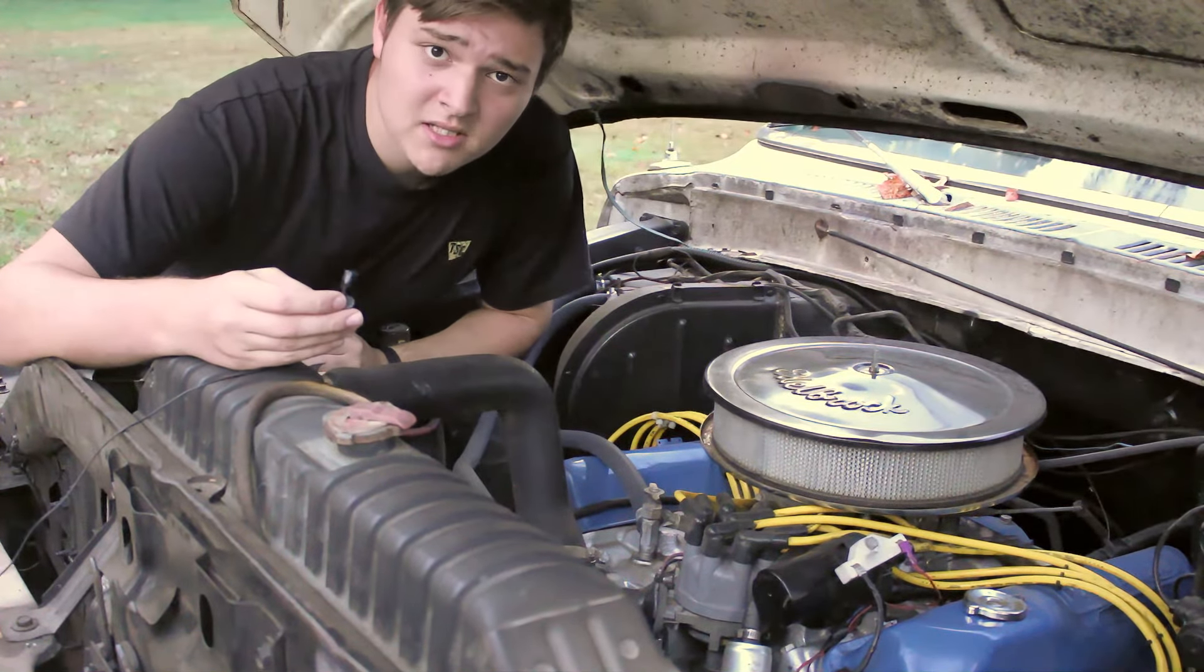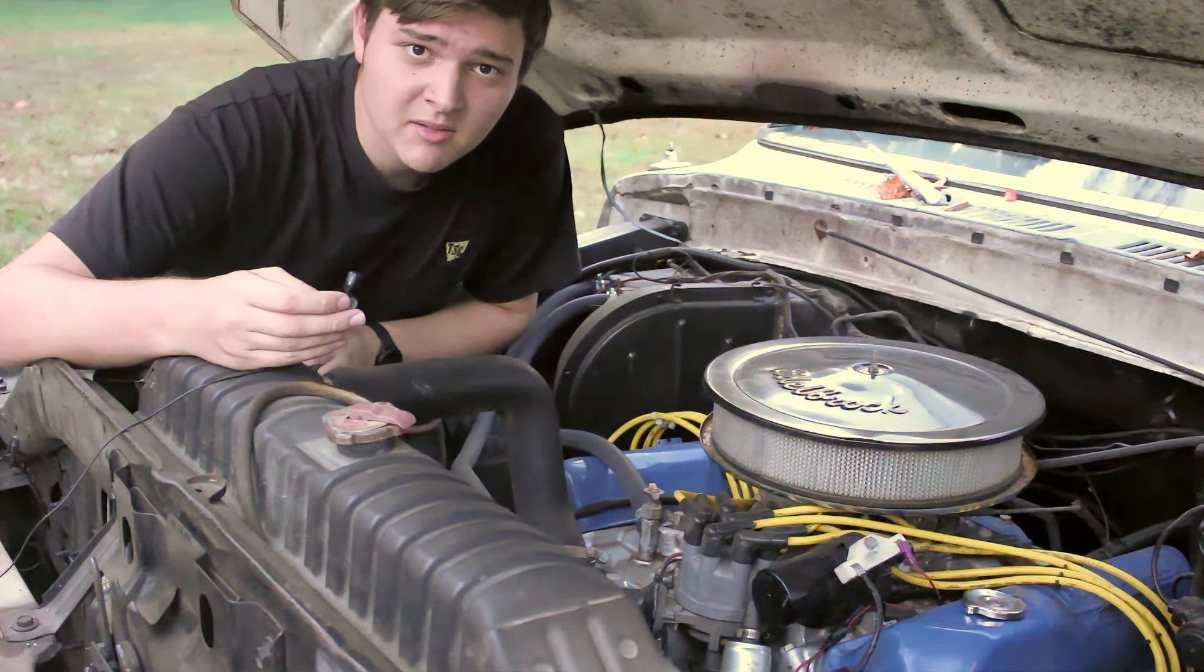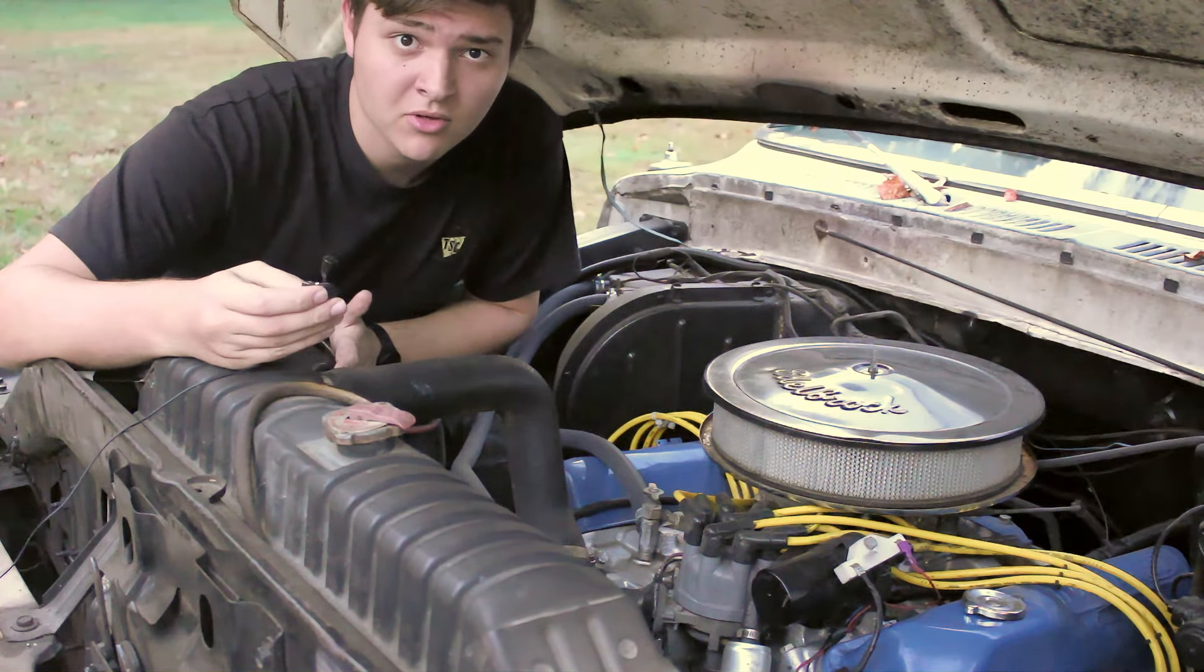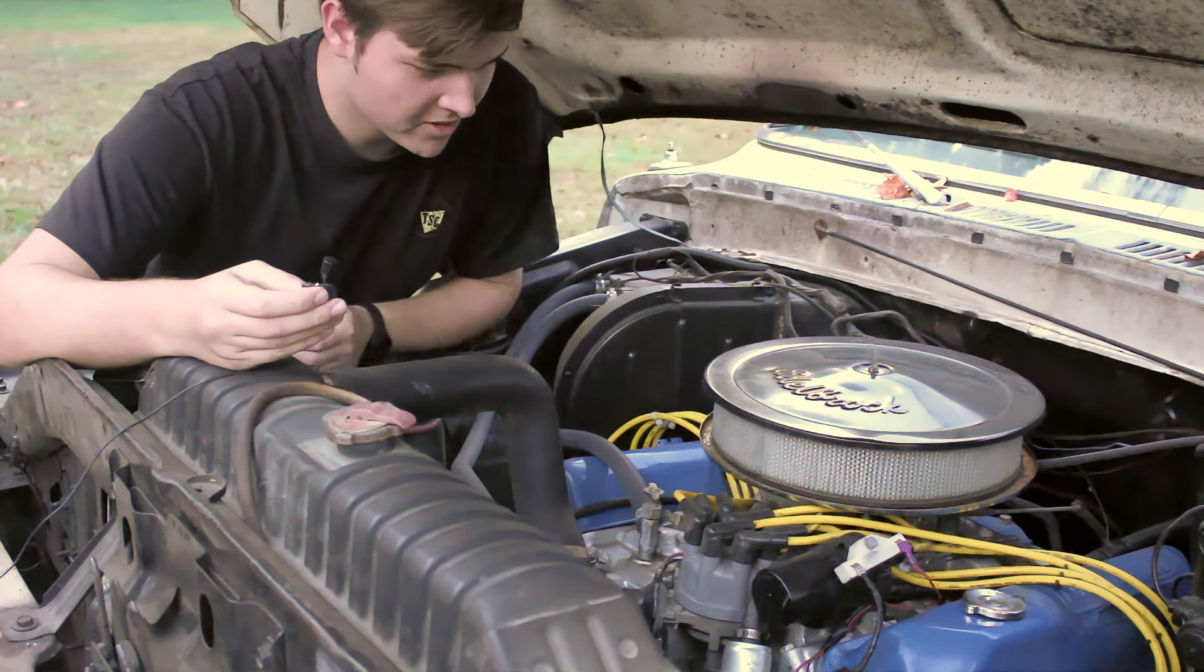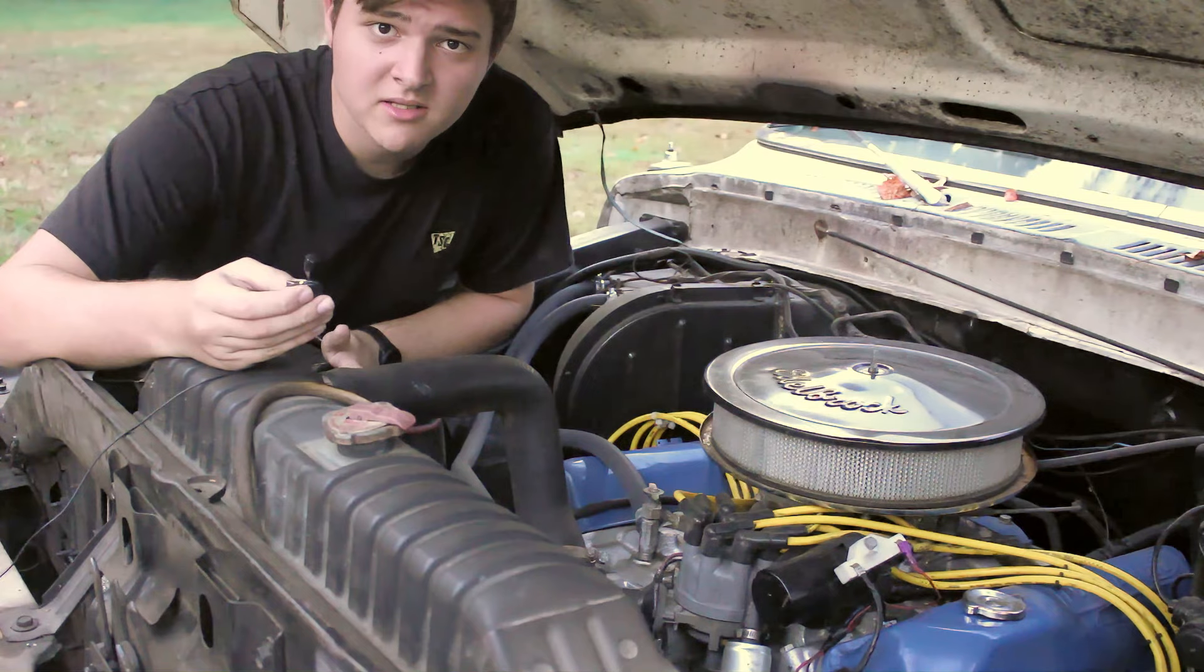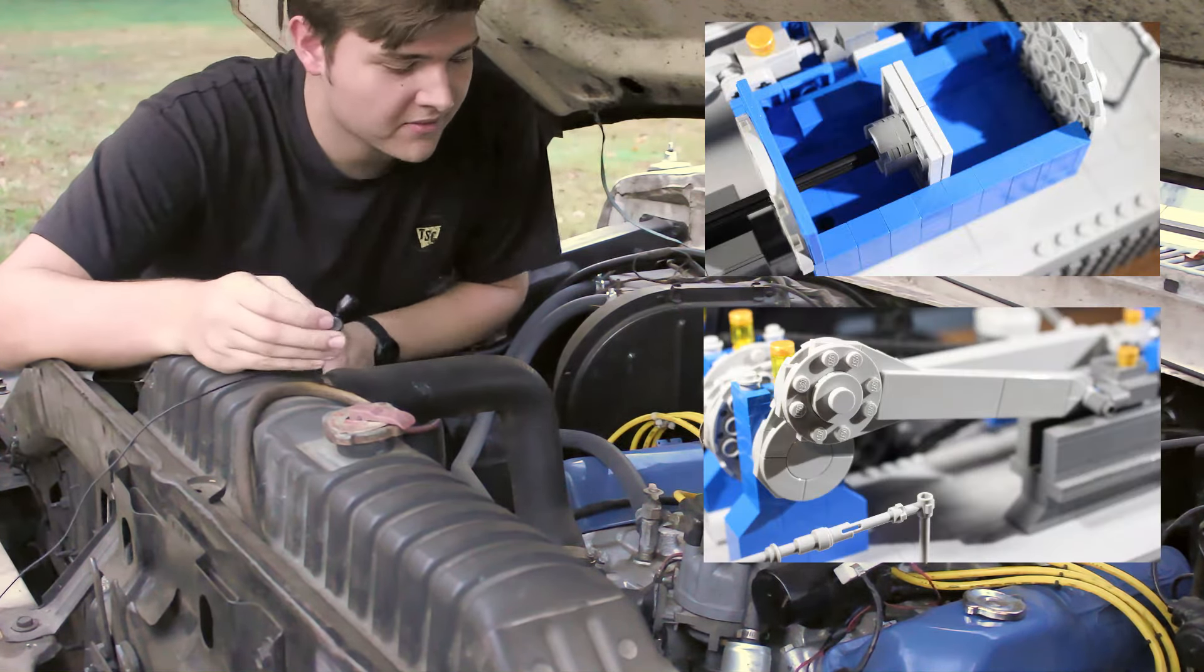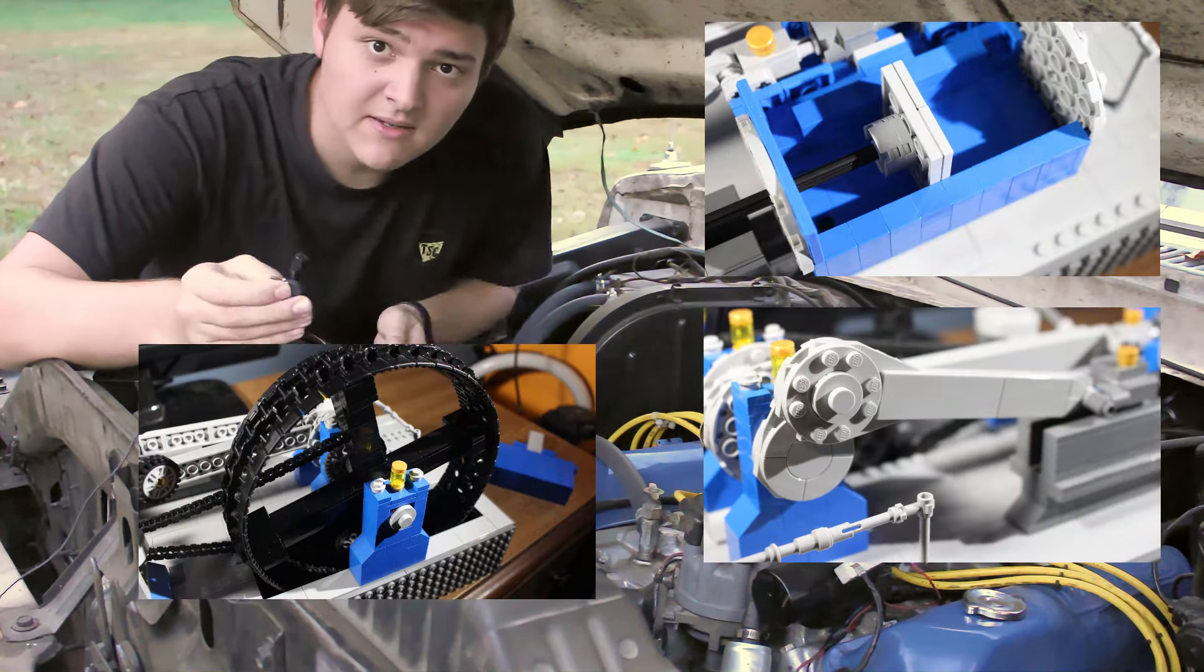Now this may come as a surprise to some people, but a steam engine has a lot of the same parts that you'd find in a regular internal combustion engine, say for example the one in your car or truck. These parts include the cylinders, pistons, crankshaft, connecting rod, flywheel, and even valves.